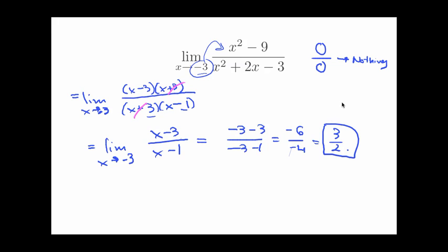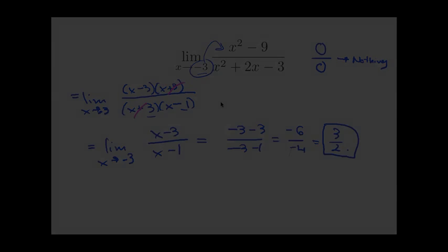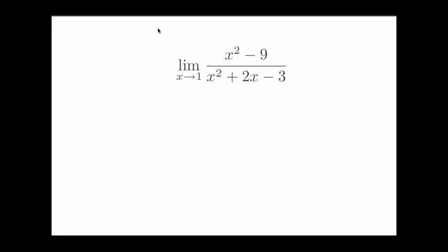Now let's take a look at the same limit done with a different limit point, x going to something else. Okay. So like I said, let's take a look at a limit with the same rational function as before. But now I have x going to 1 instead of x going to negative 3.